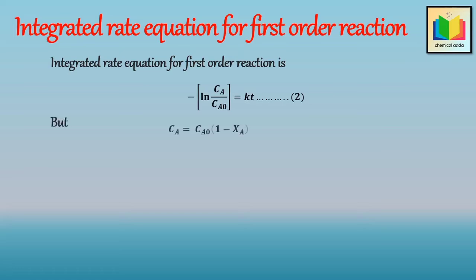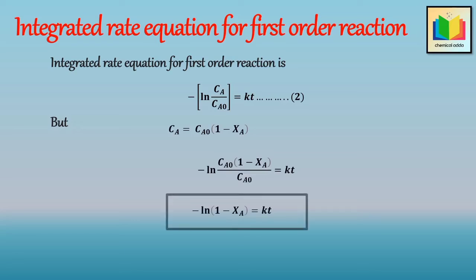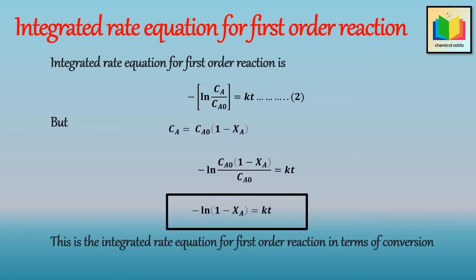We know the concentration in terms of conversion as C_A equals C_A0·(1 minus X_A). Substituting C_A into equation 2 and rearranging, we get: minus ln(1 minus X_A) equals K·T. This is the integrated rate equation for the first order reaction in terms of conversion. If we plot minus ln(1 minus X_A) versus T, we get a straight line passing through the origin with slope equal to K.